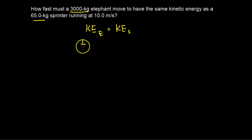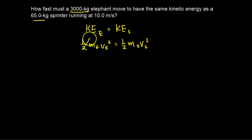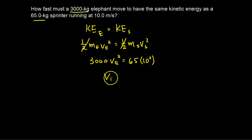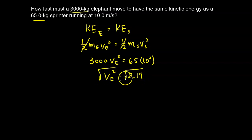The equation for kinetic energy is ½mv². Setting these two equal to each other, the halves cancel out. The mass of the elephant is 3,000 times v_e² equal to 65 kilograms times (10 m/s)². Solving for v_e², I divide both sides by 3,000 and get 2.17 on the right-hand side. Taking the square root, v_e is 1.47 meters per second.